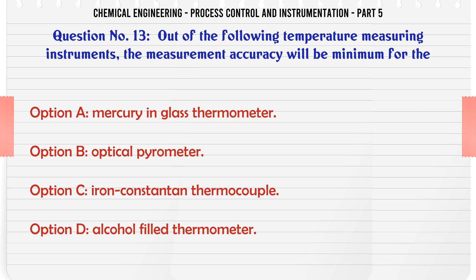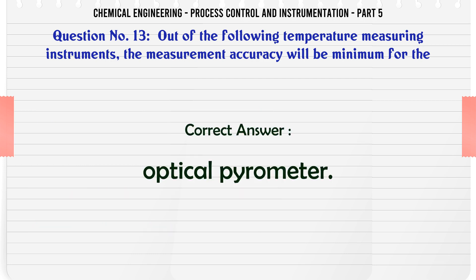Out of the following temperature measuring instruments, the measurement accuracy will be minimum for the: A. Mercury in glass thermometer. B. Optical pyrometer. C. Iron constantan thermocouple. D. Alcohol filled thermometer. The correct answer is Optical pyrometer.